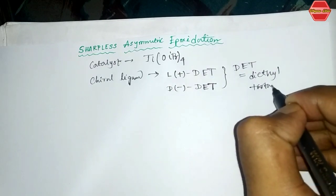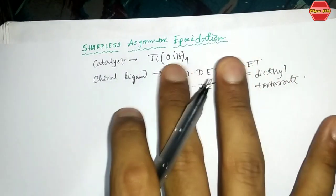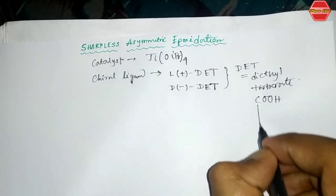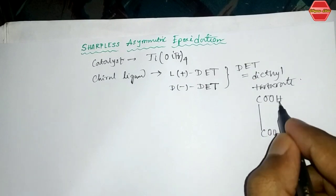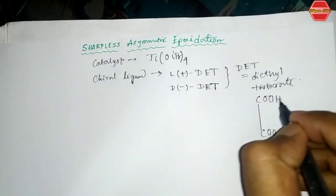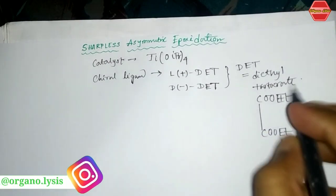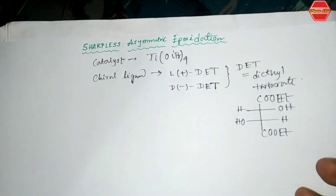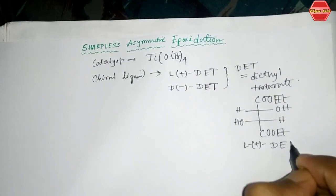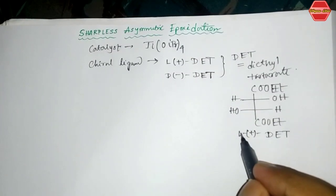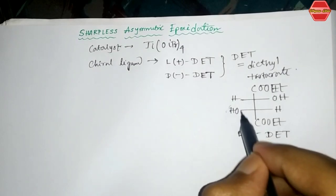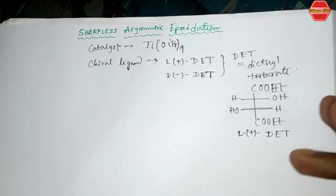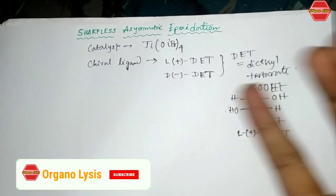Diethyl tartrate is derived from tartaric acid. In the structure, the two hydroxyl groups and the ethyl ester groups are present. If the OH group is on the left side, it is called the L configuration — that is L(+)-DET. If the OH group is on the right side, it is called D(−)-DET.